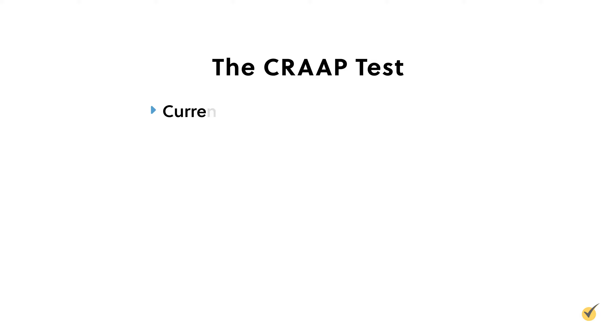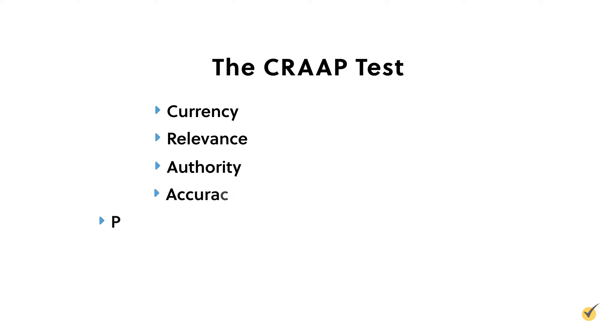The CRAAP test helps you quickly evaluate sources to find correct, credible information for your writing. It stands for currency, relevance, authority, accuracy, and purpose. If your source has these five things, you can trust it. But if some of these are missing, you should be cautious.